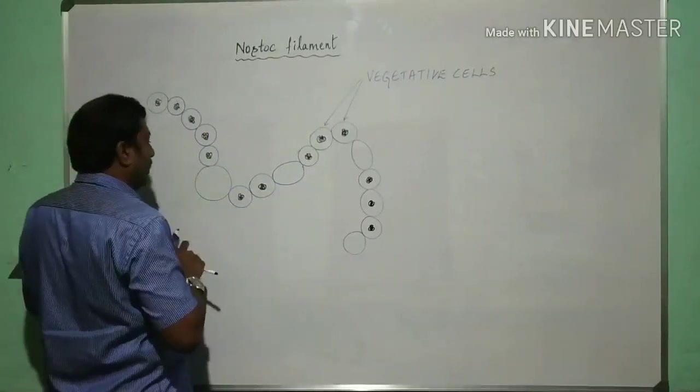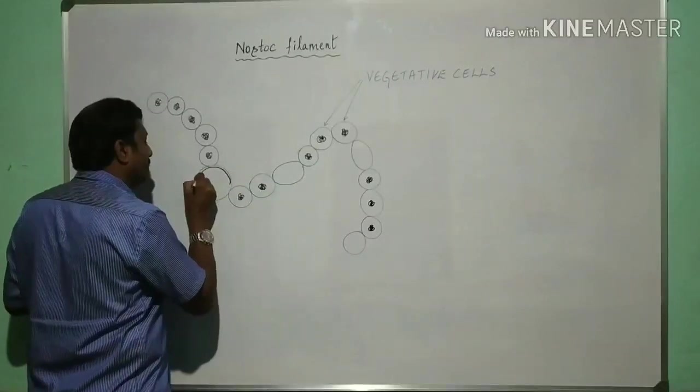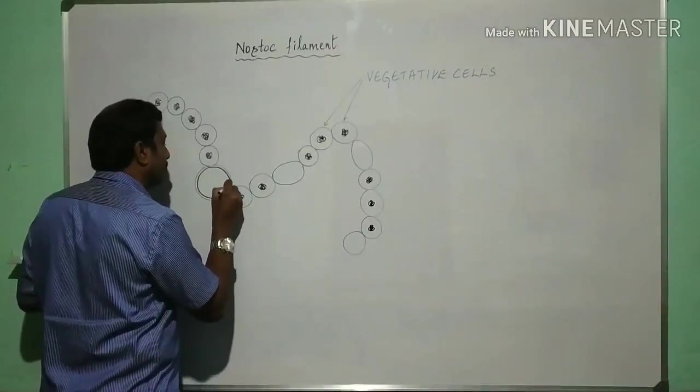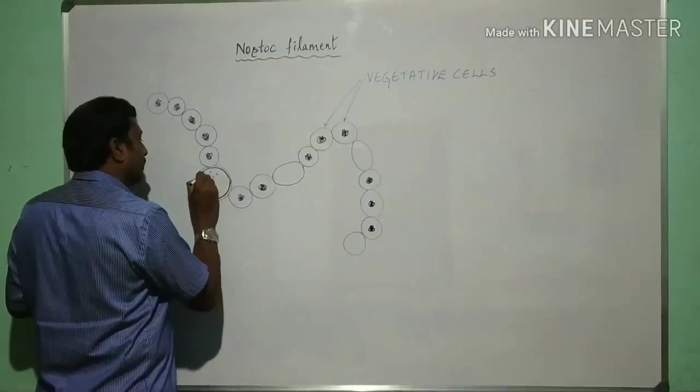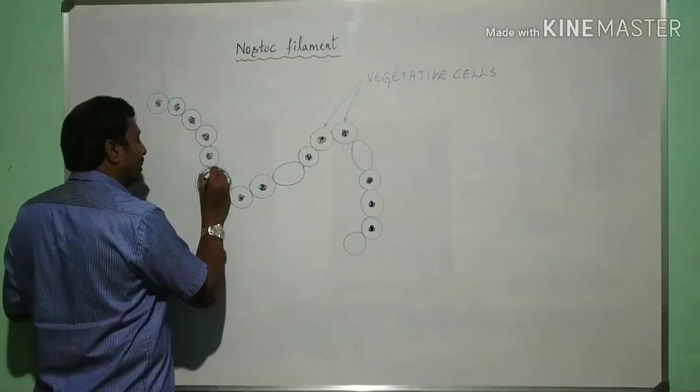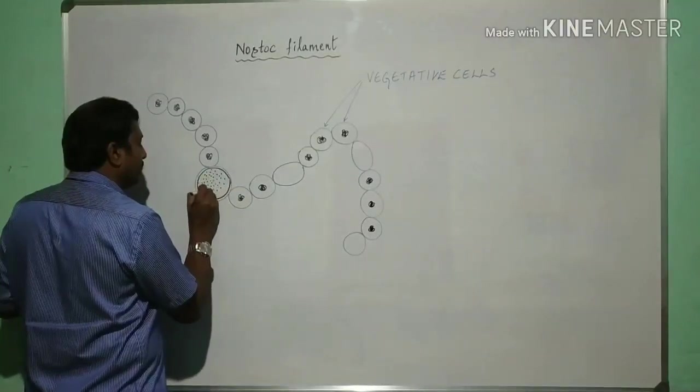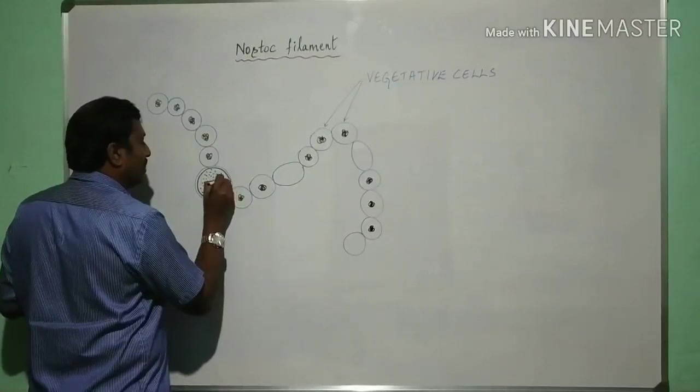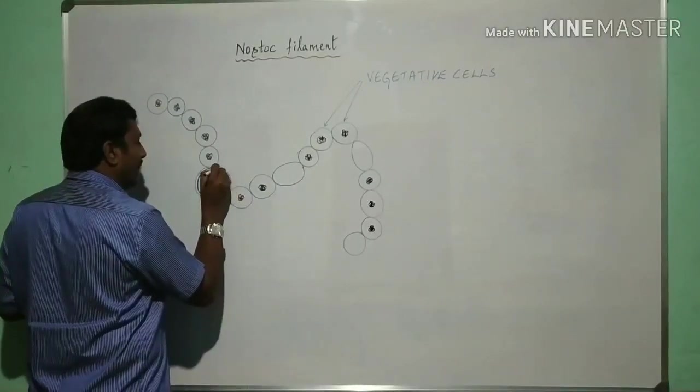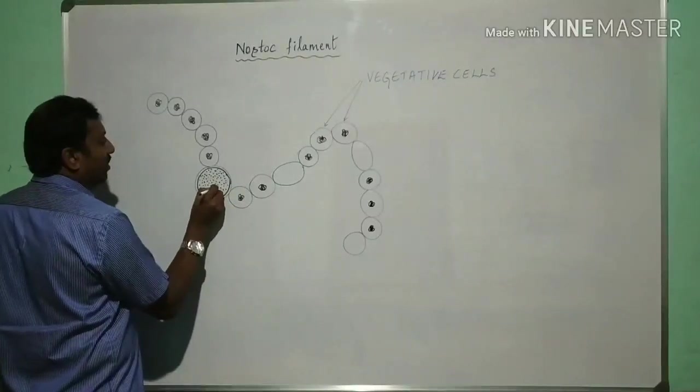And this is the larger cell, perennating cells called akinete that stores food materials, formed during unfavorable conditions, like when there is drying of the pond, where water limit is very less.